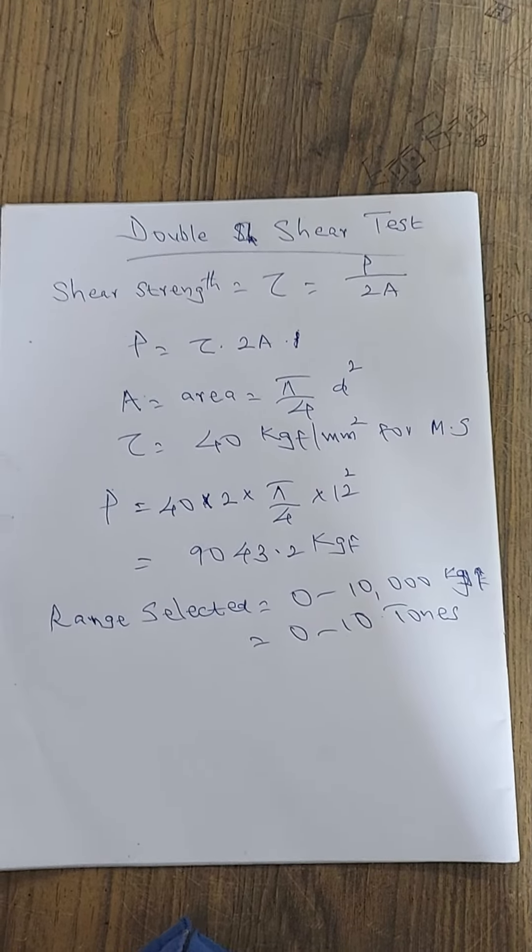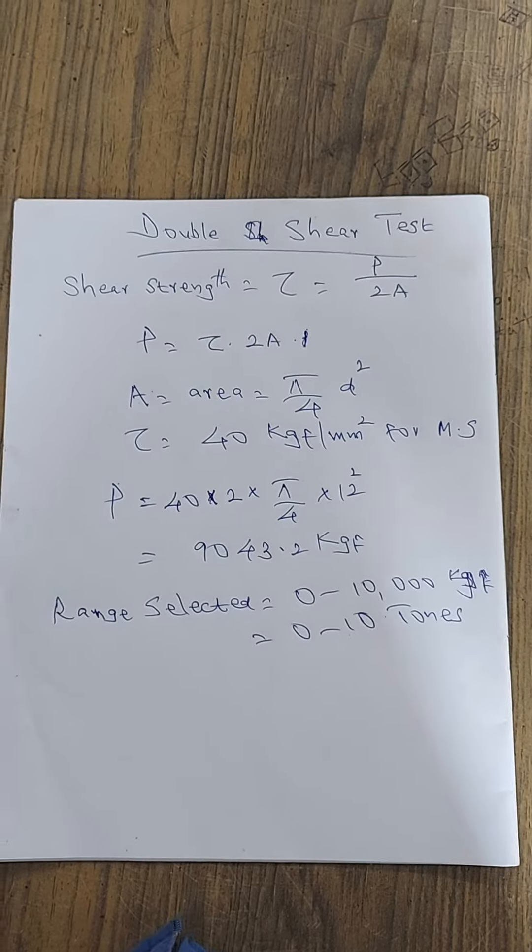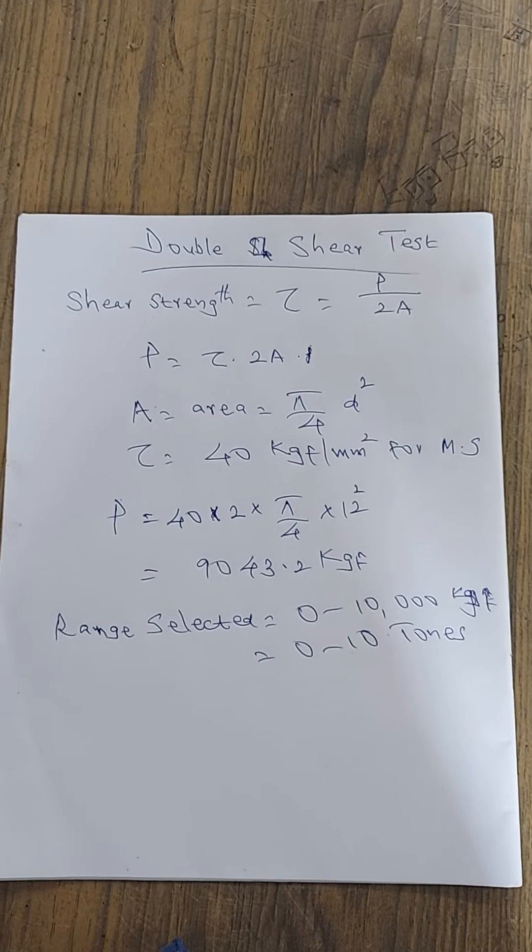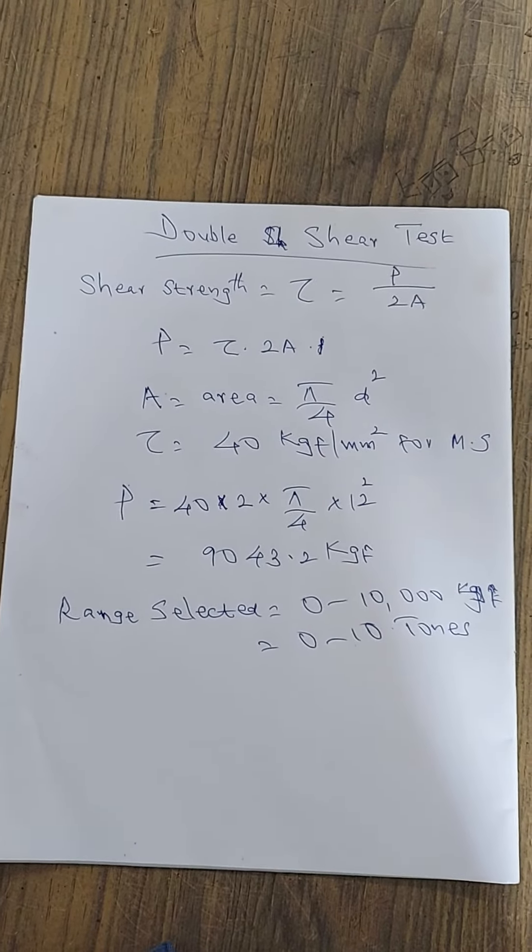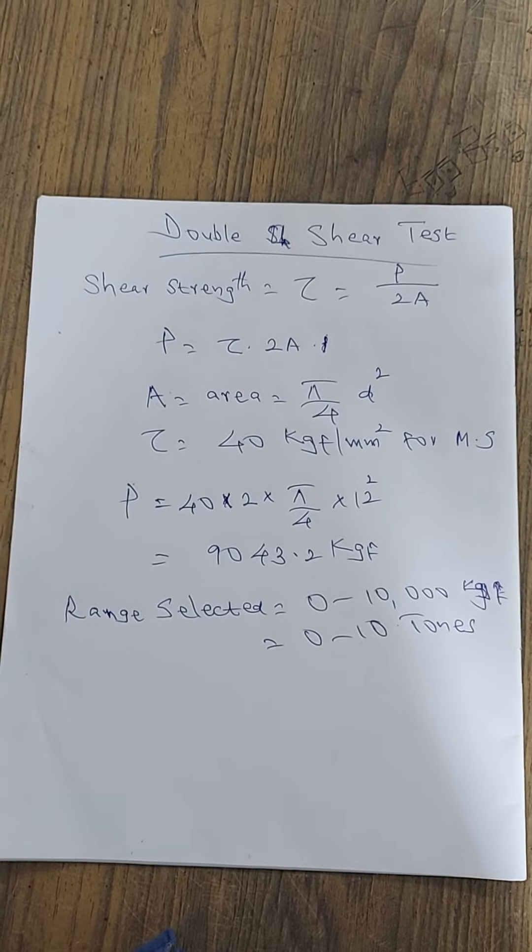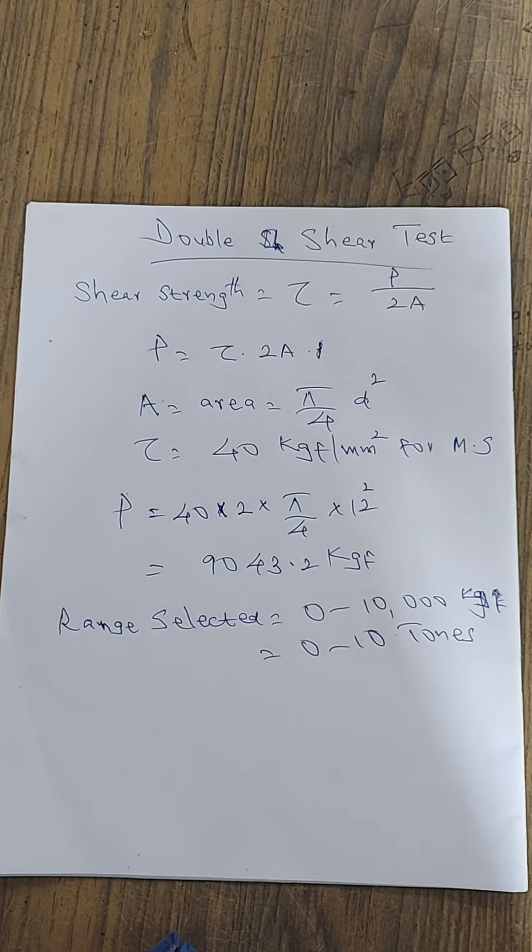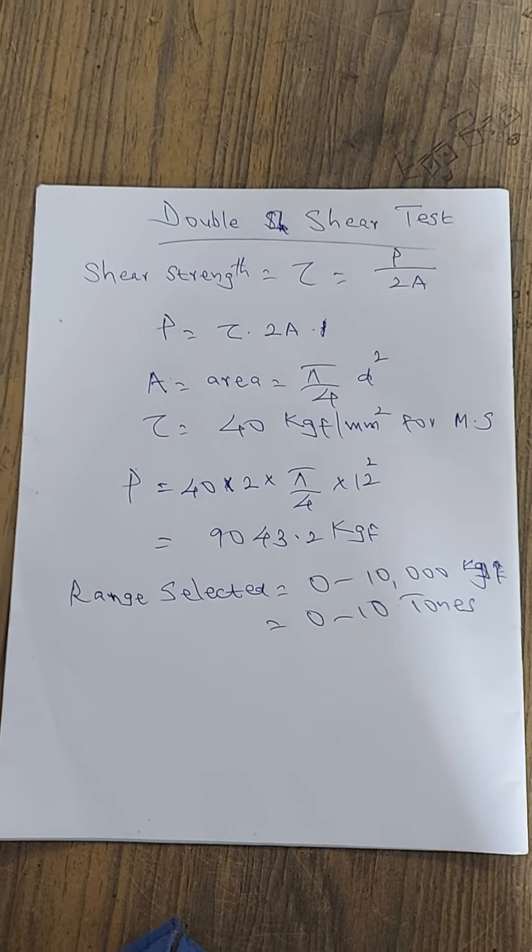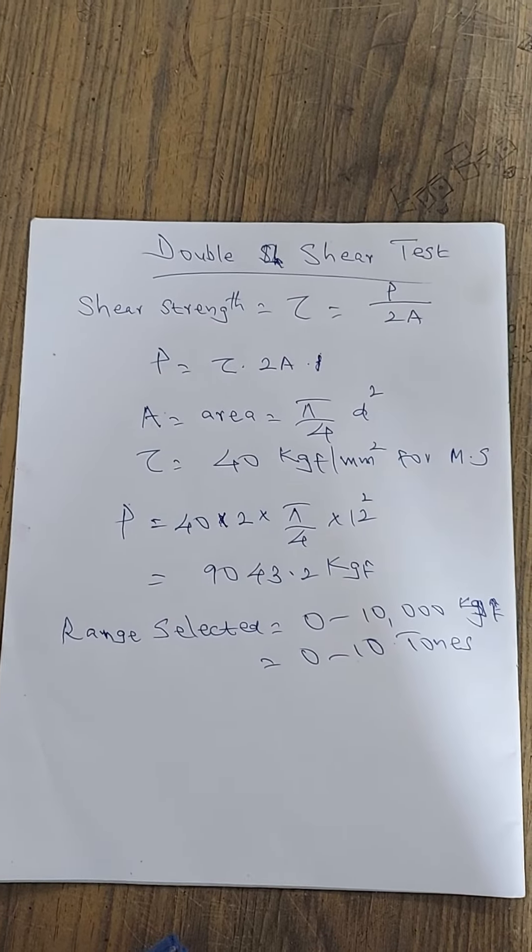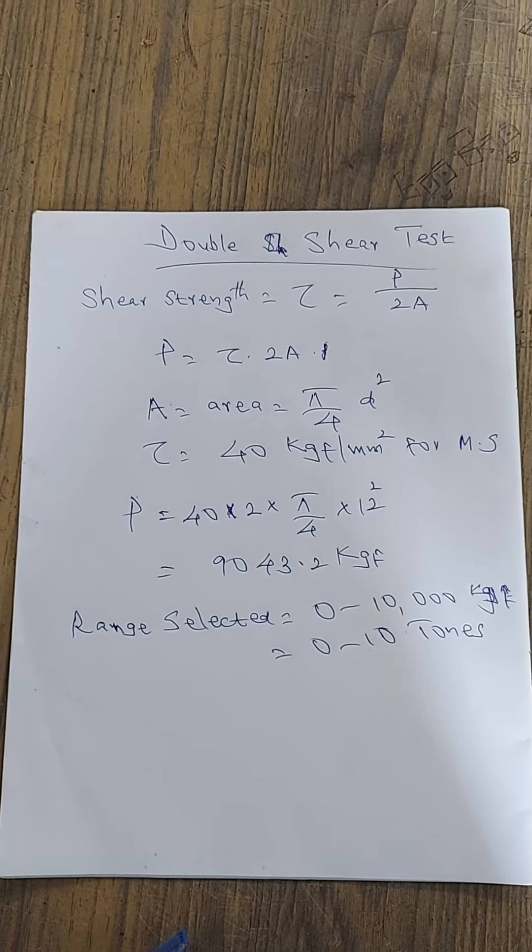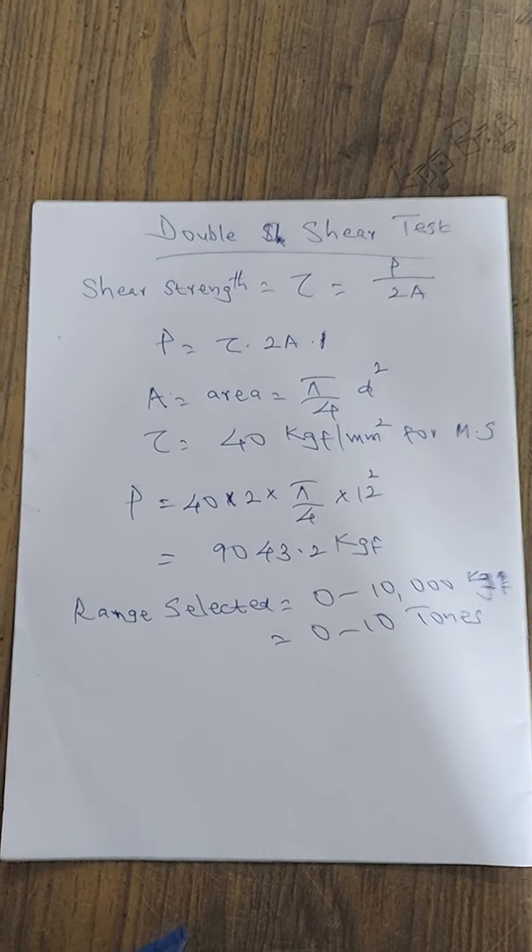I have selected a specimen made up of mild steel. For mild steel, the standard shear strength is 40 kilogram force per mm squared.